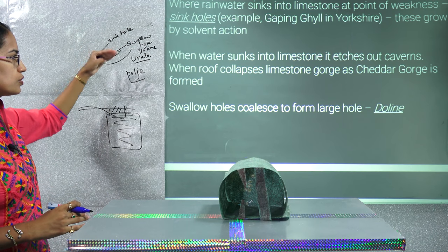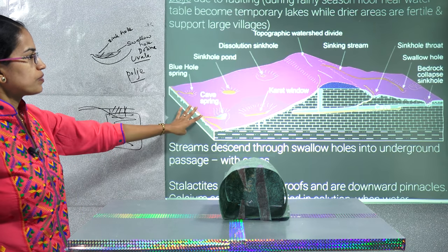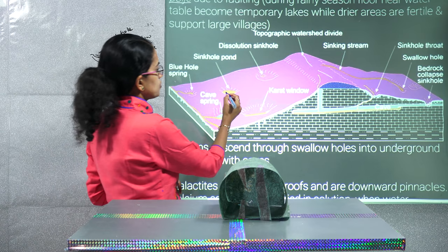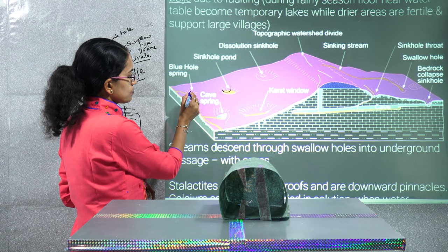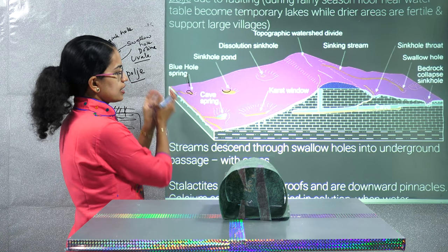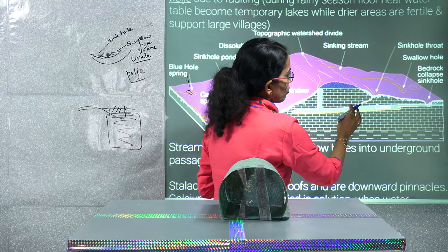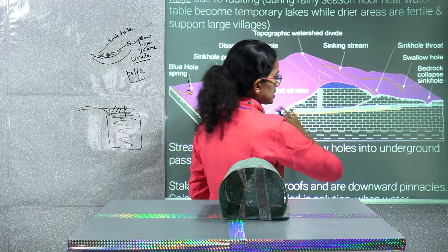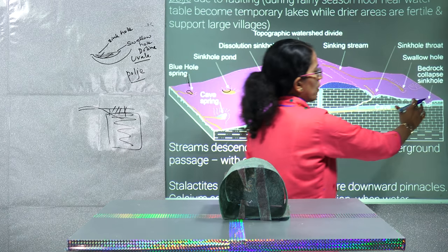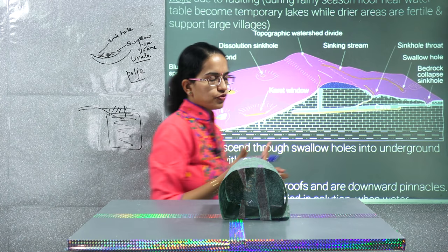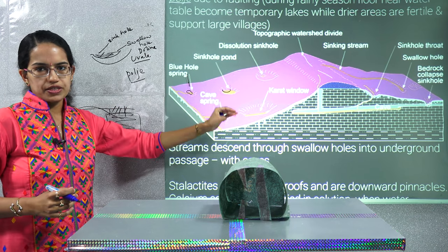To summarize the surface features: a small sinkhole develops, streams re-emerge as springs (resurgence), the river going underground forms cave structures, and where the bedrock collapses, a gorge is formed. These are the main features that appear on the surface of a limestone or karst topography.